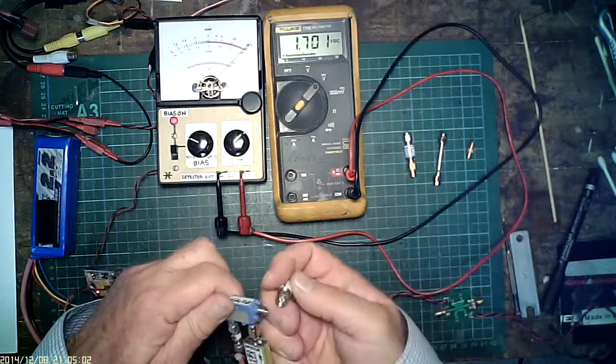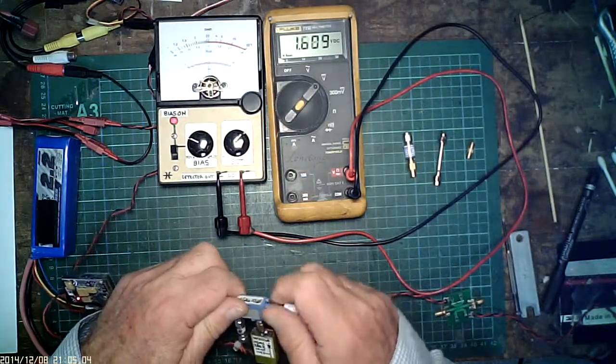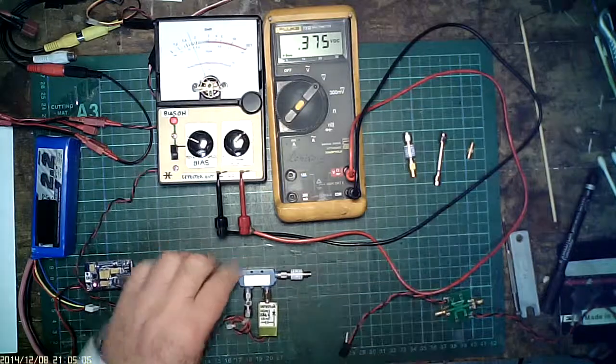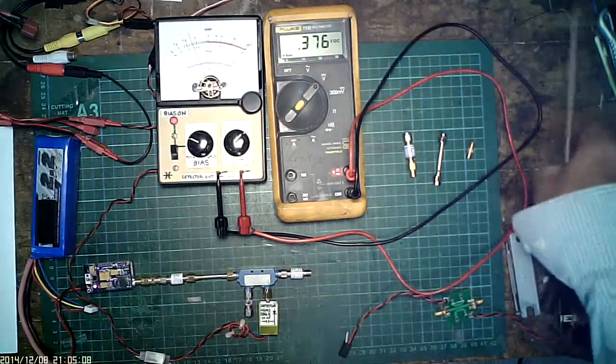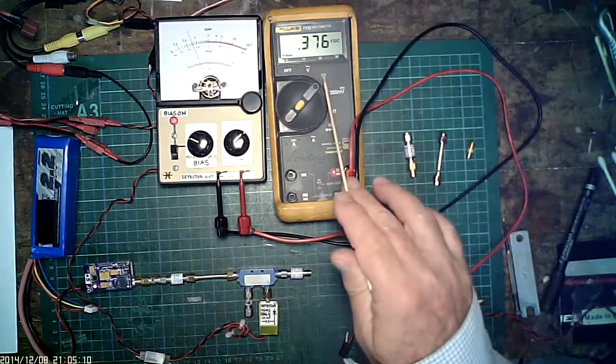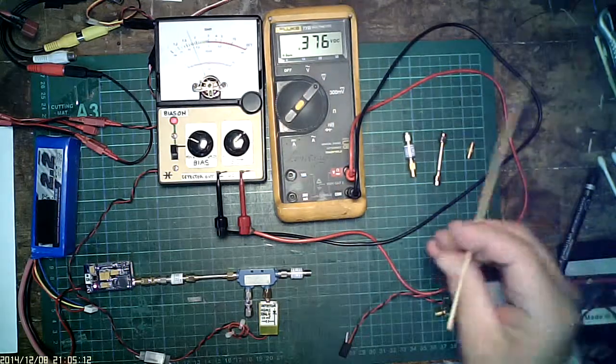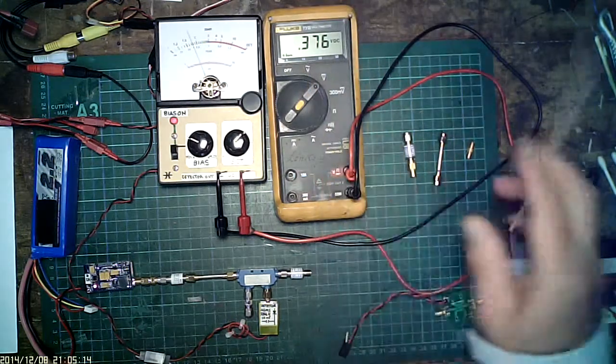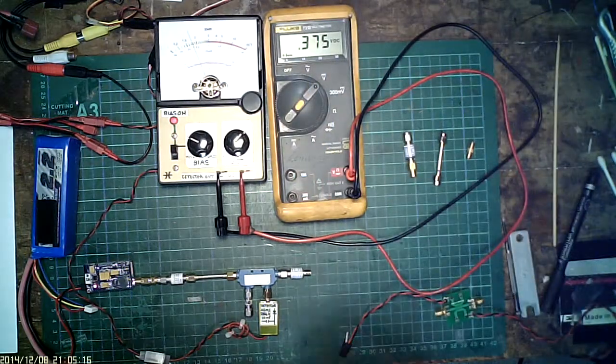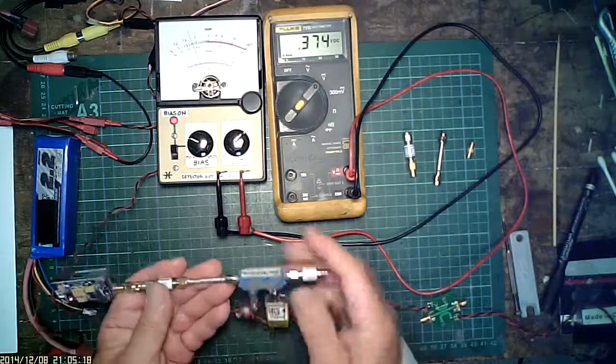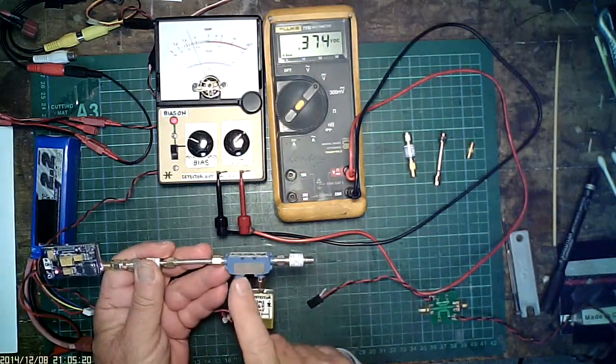So we plug it on. It's actually reading 1.75, which is fairly close. And the voltage dropped from 1.7 down to 0.376. So it just shows you normal operation of this MAC Technology coupler to measure VSWR. It's working well.